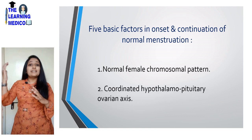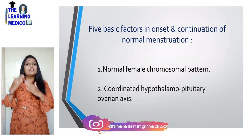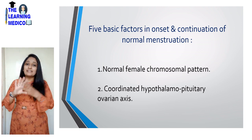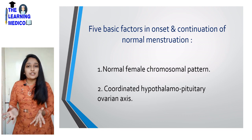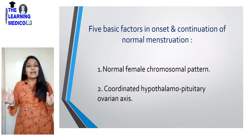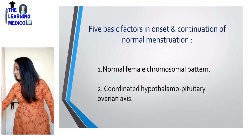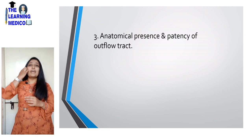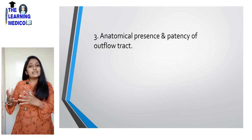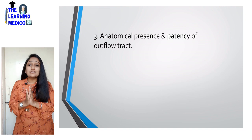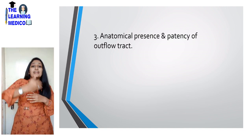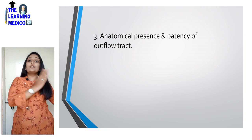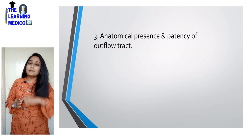The second factor is the coordinated function of the hypothalamus, pituitary gland, and ovaries. There should be proper coordination between these three organs. The third factor is the anatomical presence and patency of the outflow tract — the female reproductive organs should be properly positioned and the outflow tract should be patent.